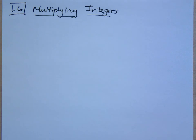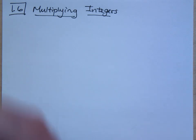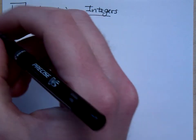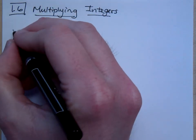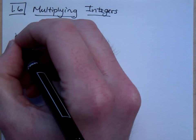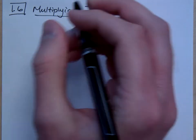Multiplication says, 'I don't care, man. I love you. Give me a hug.' Except don't hug me though, because it gets kind of weird. So, we're talking about multiplying integers.